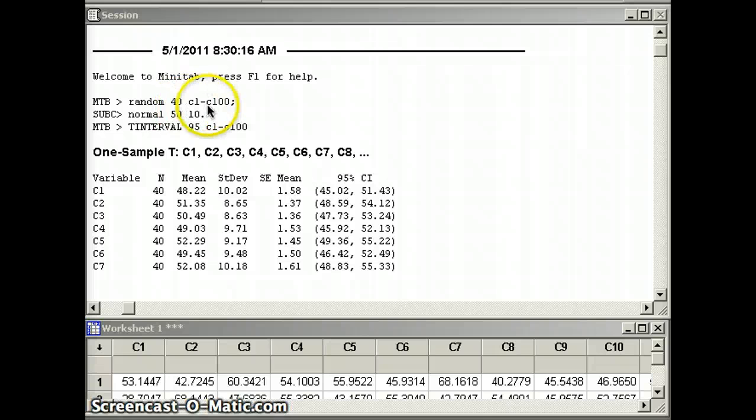So here's our syntax: random 40 c1 through c100, normal 50 10, t-interval 95 c1 through c100. And the first researcher had an n of 40, had a mean of 48.22, so that's his x̄ for his 40 elements. His mean was 48.22. His standard deviation, his s for those 40 elements, was 10.02. So notice his mean x̄ of 48.22 is pretty close to 50, and his s of 10.02 is pretty close to 10. Now from those numbers, he's going to construct a confidence interval, and the question is, does that confidence interval capture the population mean of 50? Is 50 between 45.02 and 51.43? And the answer to that is yes. So this is a good confidence interval.